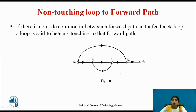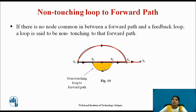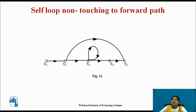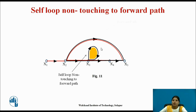Non-touching loop to forward path: if there is no common node between a forward path and a feedback loop, that loop is said to be non-touching to that forward path. Here the two forward paths go through nodes x1-x2-x3-x4 and x1-x4 respectively. This loop does not touch that forward path, so it is a non-touching loop to forward path. Similarly, a self loop that shares no node with a forward path is a self loop non-touching to that forward path.